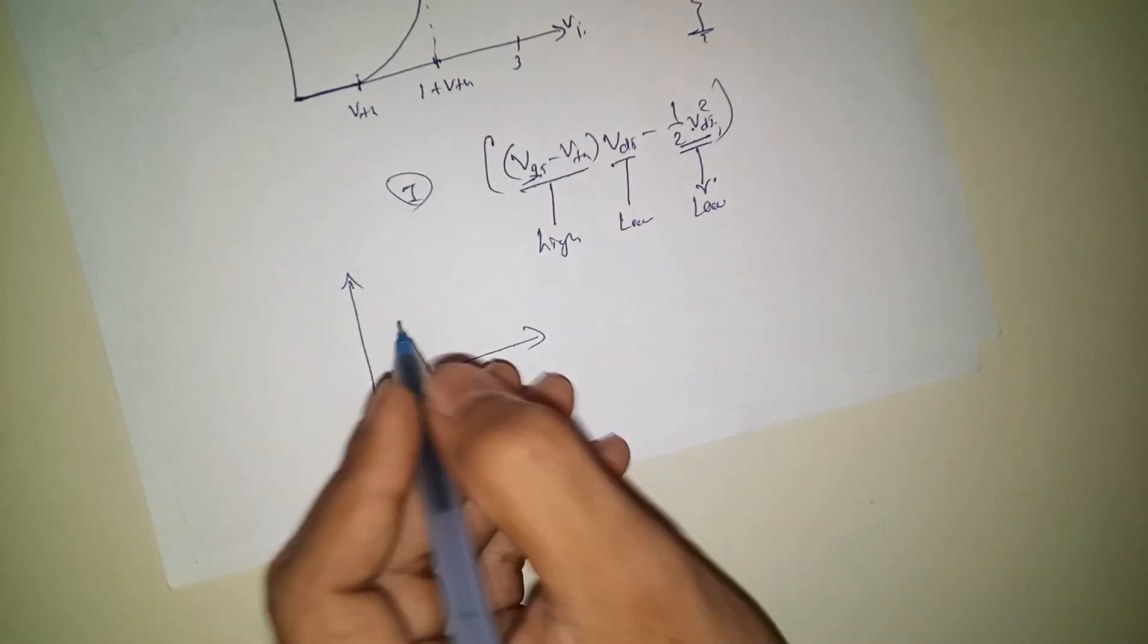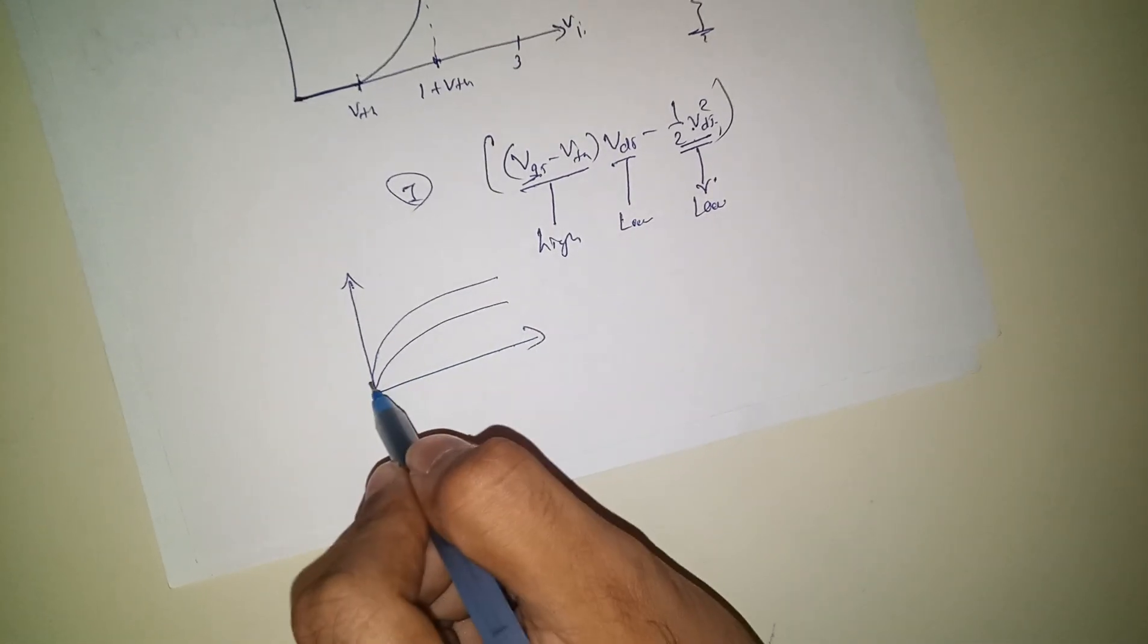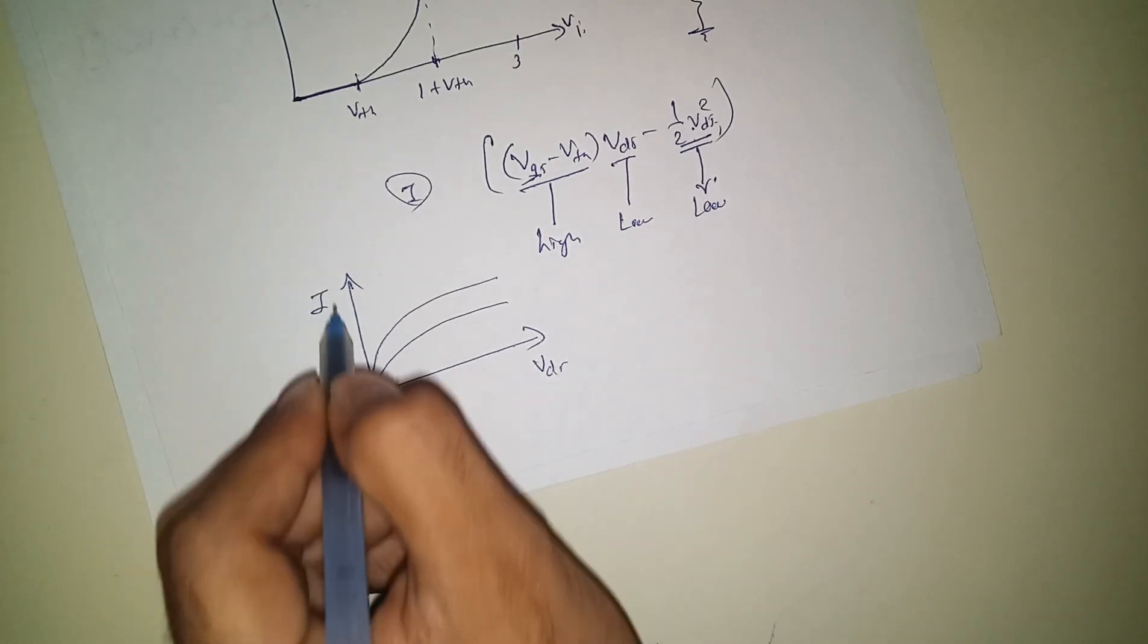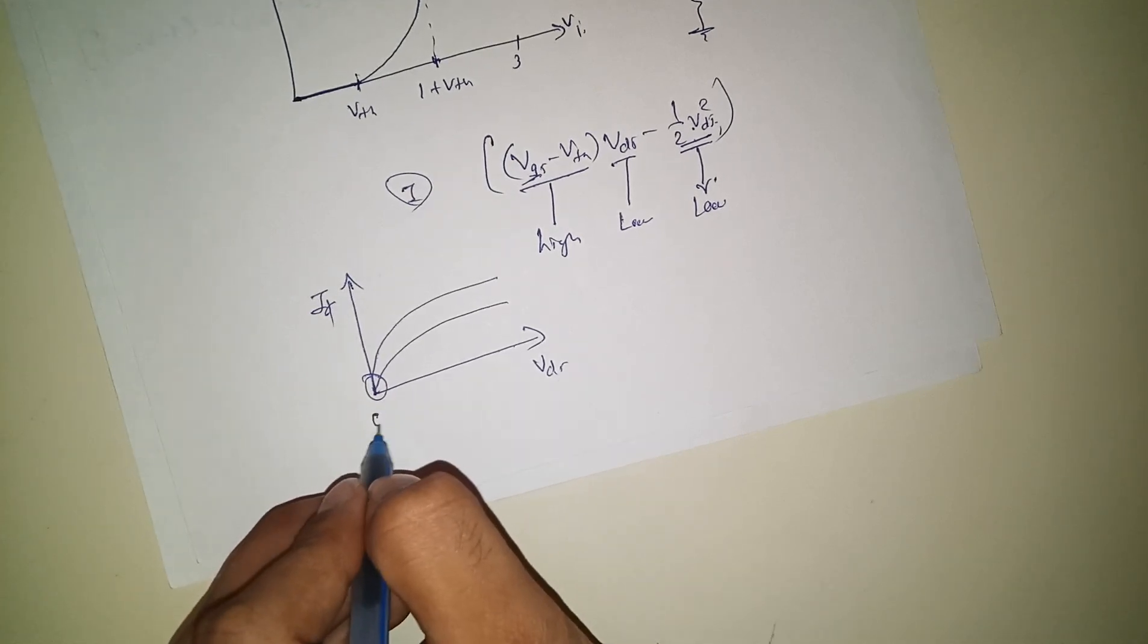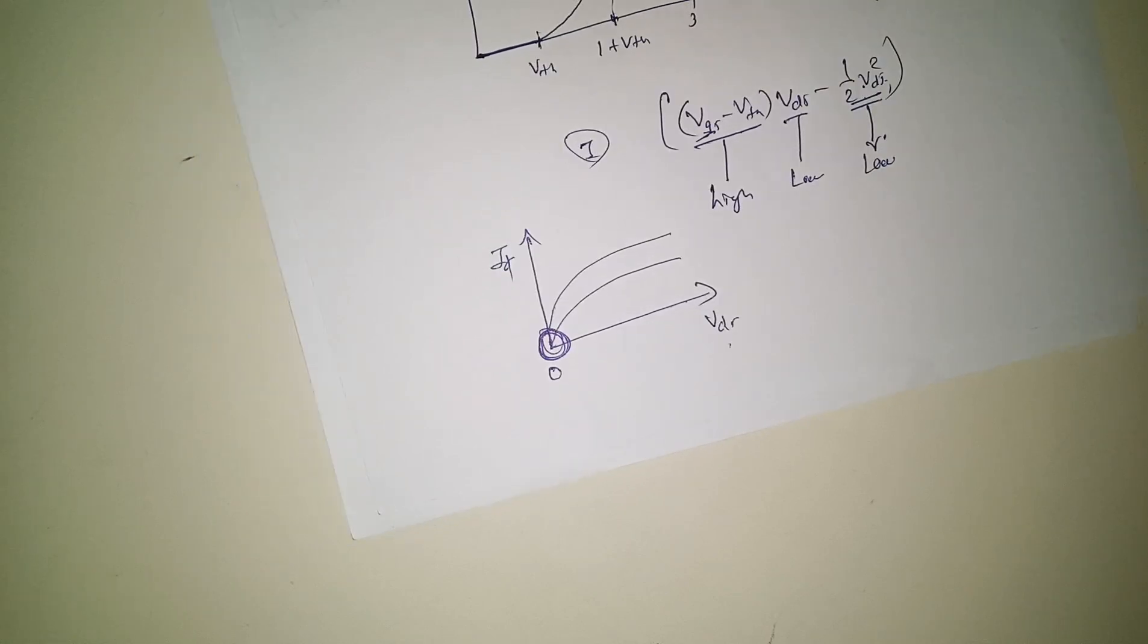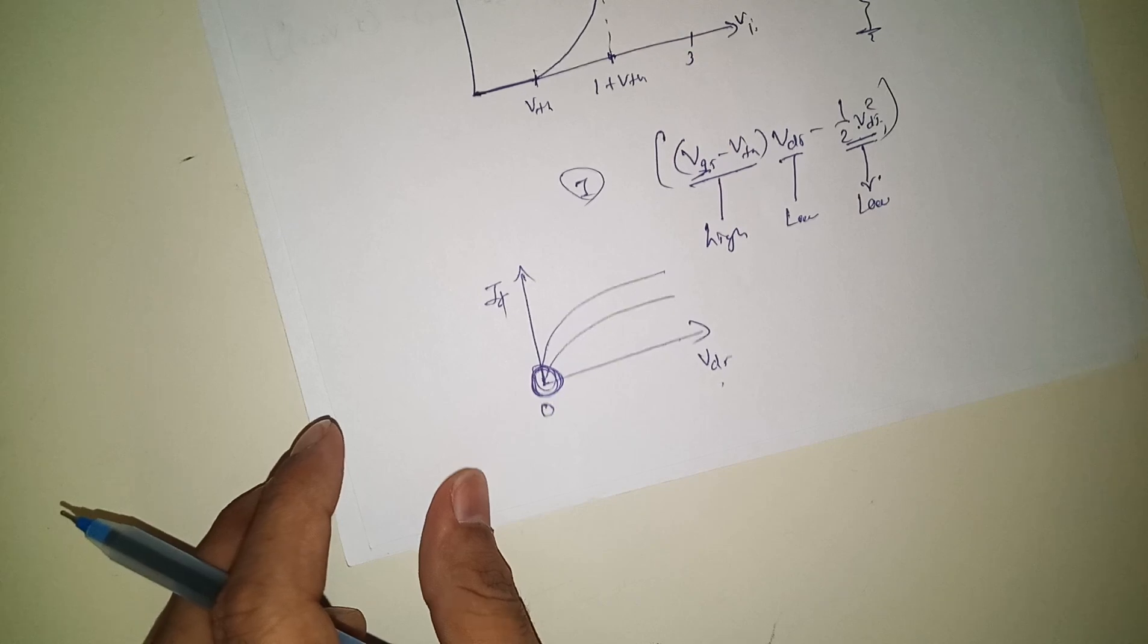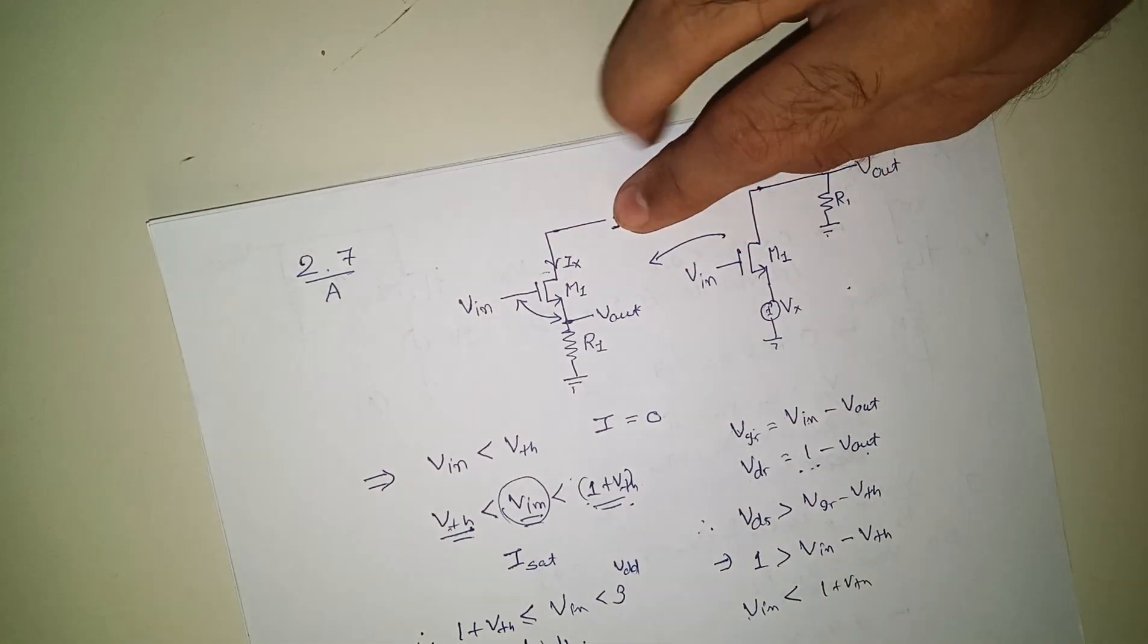Also, in the I_D versus V_DS, you will find this kind of graph. So this is V_DS and this is I_D. So you can see that when V_DS is zero, ideally the current is zero, right? But in this case, some current will be definitely flowing from the source follower.